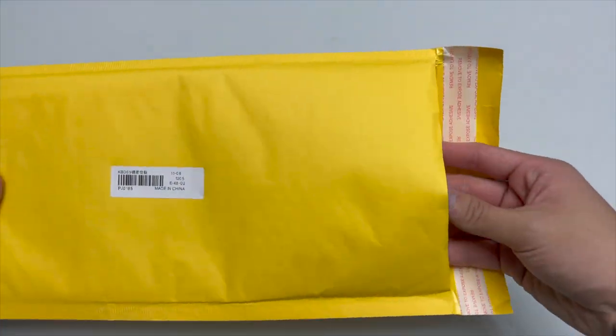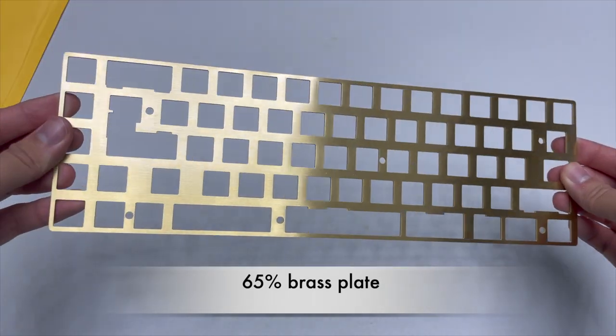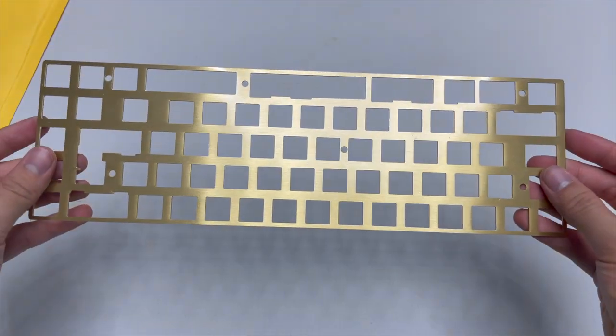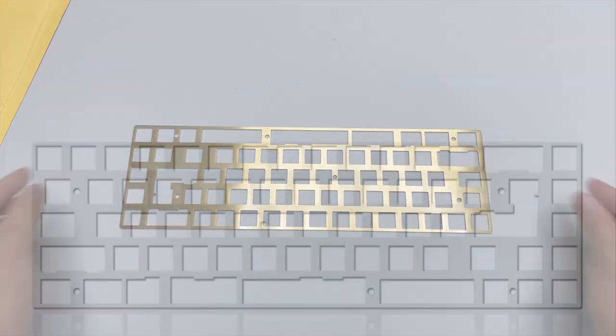Now to the plate. The heavy brass plate has this brushed finish and is cold to the touch. Brass plates are the most premium type of plate you can get. They are denser than aluminium thus it gives a more sturdy typing experience.